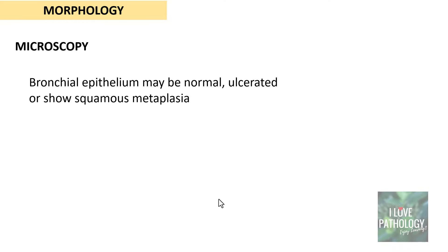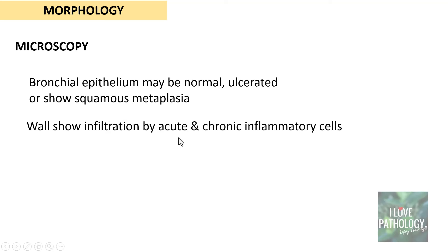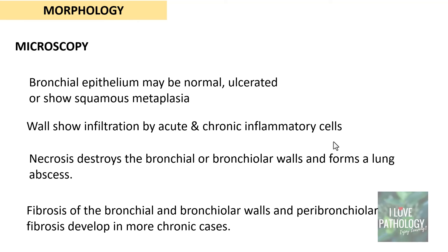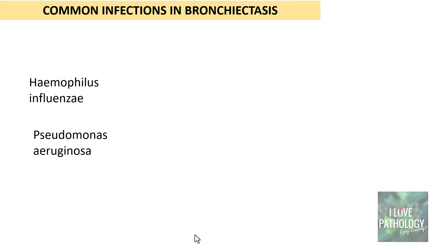Microscopically, the bronchial epithelium can be normal if infection is minimal, ulcerated in acute inflammation, or show squamous metaplastic changes due to chronic inflammation. The wall of the bronchi and bronchioles shows infiltration by acute and chronic inflammatory cells. Necrosis is often evident, destroying the bronchial and bronchiolar walls, and can form abscesses with coexistent infection. Fibrosis of the bronchial walls occurs in longstanding cases, and peribronchial fibrosis develops in more chronic cases. Pooling of secretions acts as a nidus for infection, which in turn promotes further dilatation — creating a vicious cycle.